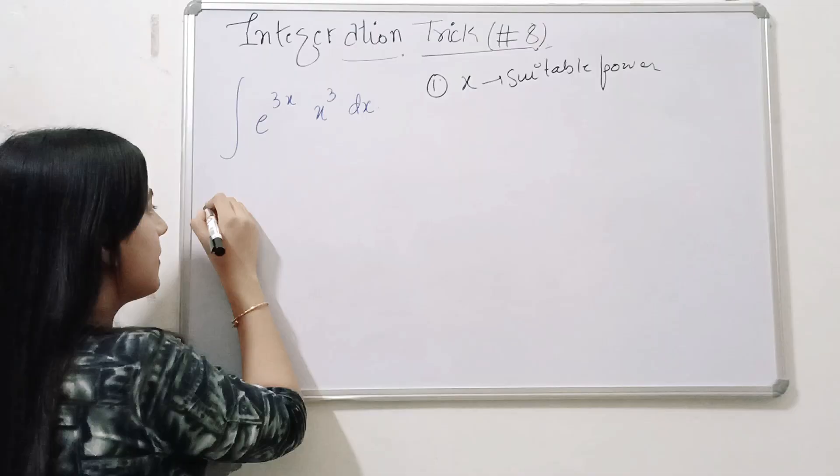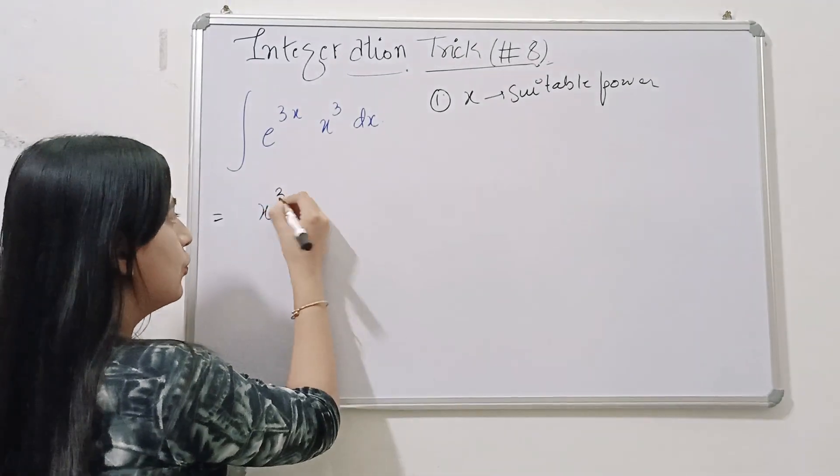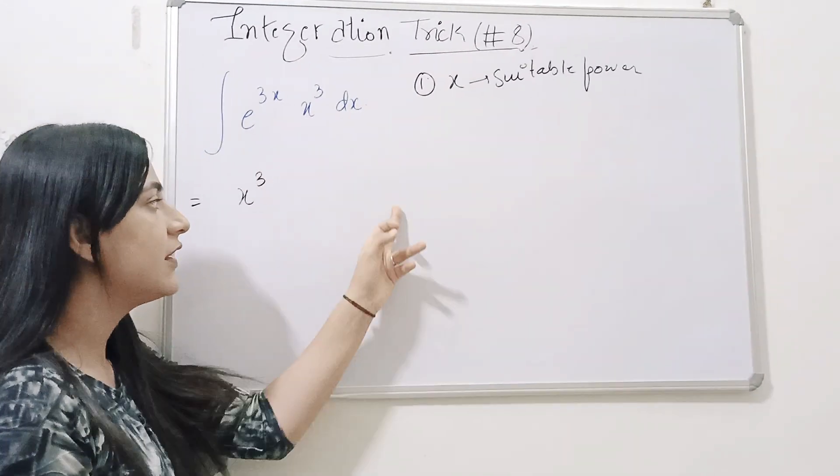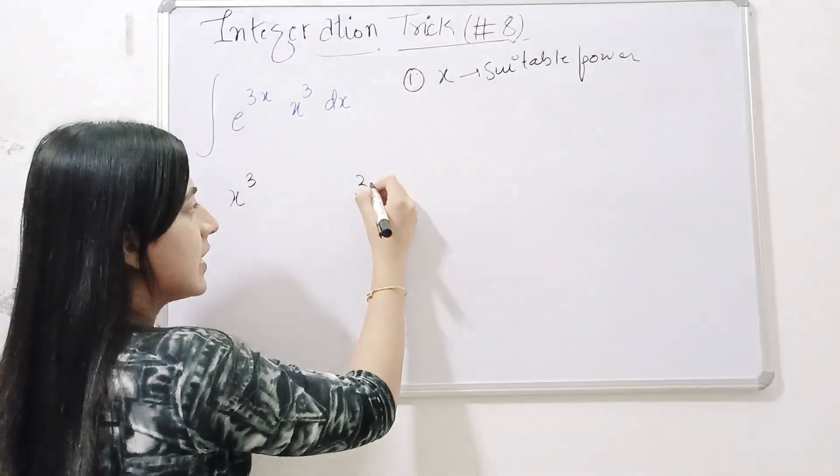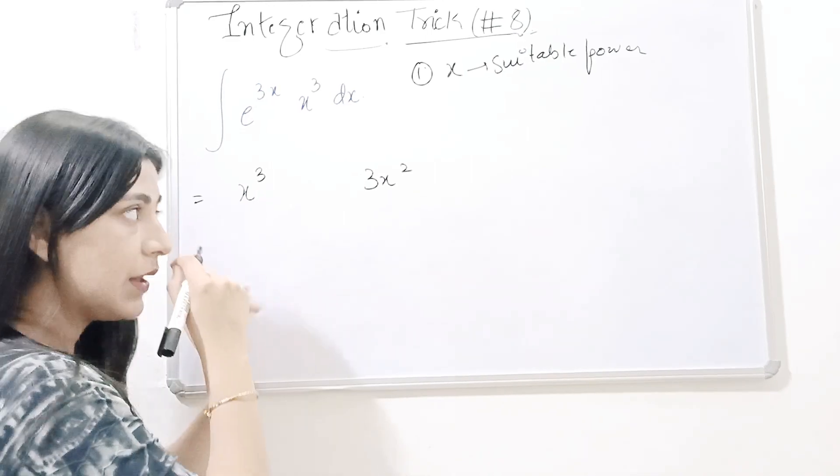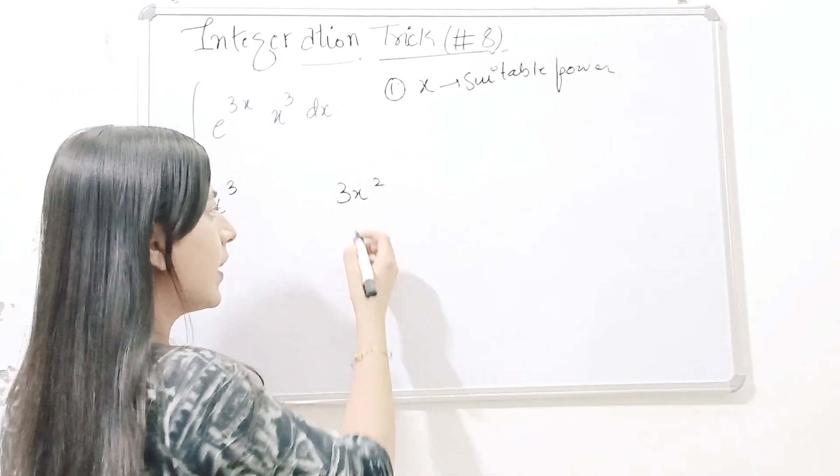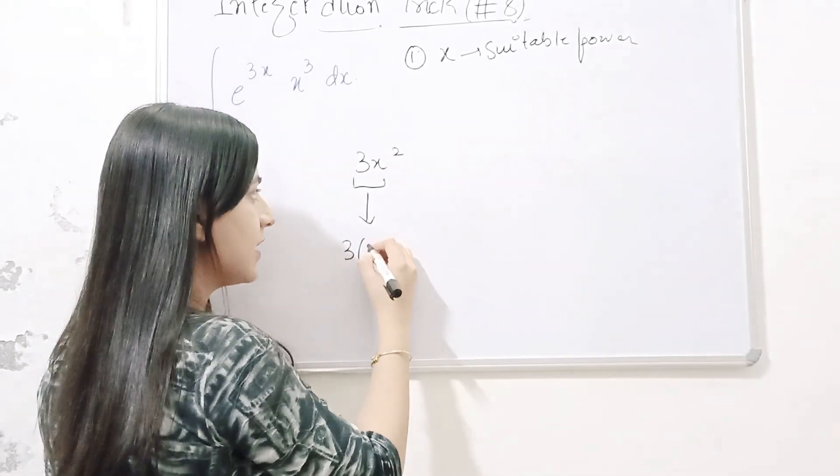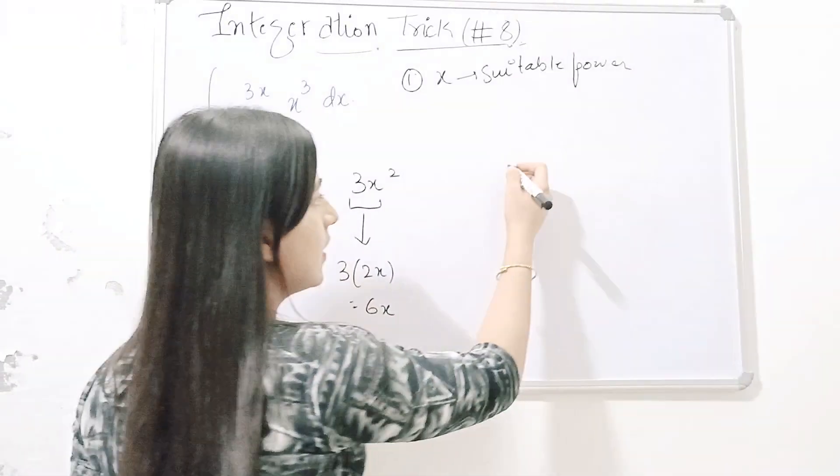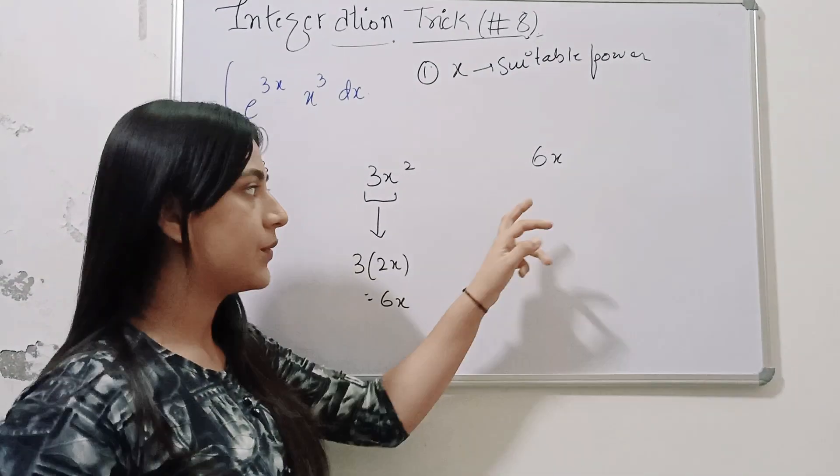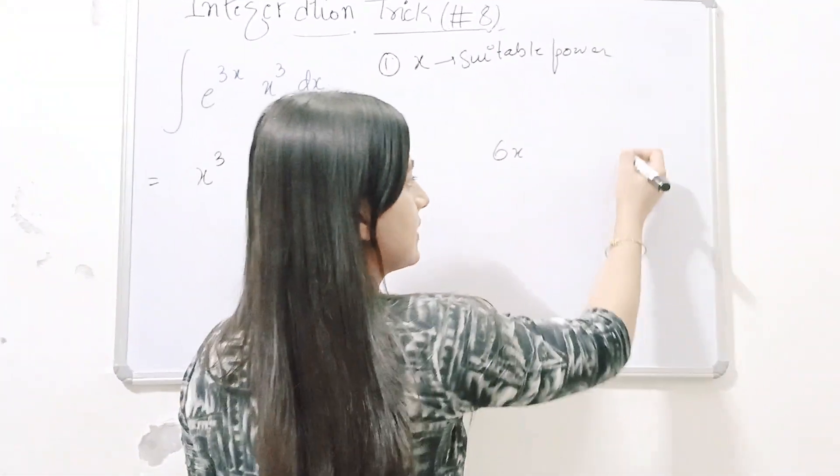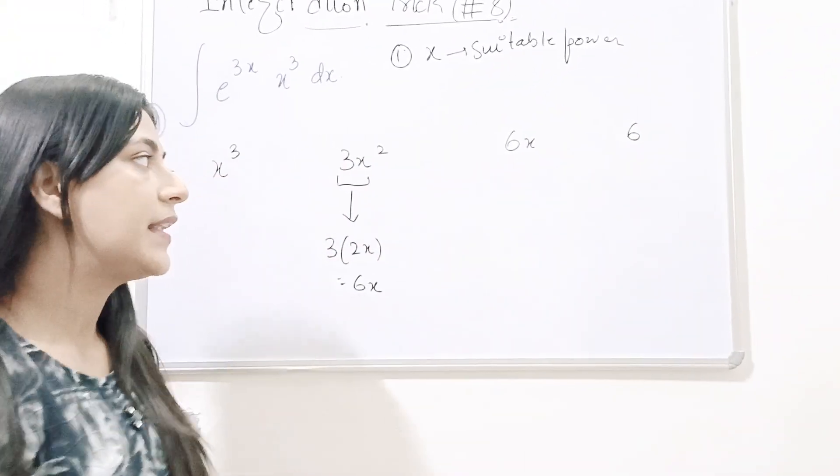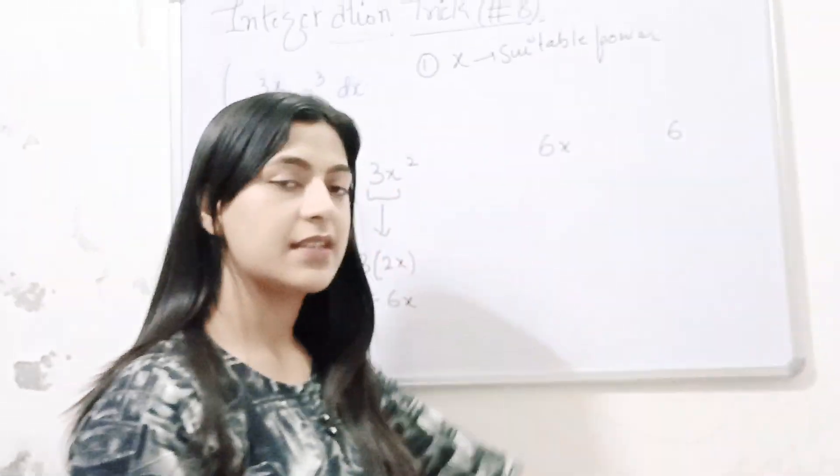So, iska answer hamaare paas kya hai, first of all write x cube, then the derivative of the x cube, it is 3x square, in the third one, is the derivative of the 3x square, that is 3 into 2x, it will be equal to 6x, and last, it will be the derivative of the 6x is 6, and the very last is the derivative of 6 is 0.